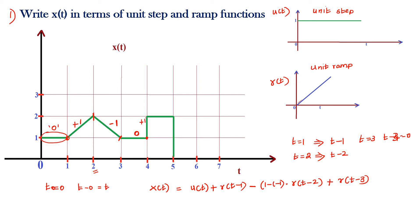From this flat region the amplitude rises by one — it is a unit step signal again. The starting point of this unit step signal is t = 4. Since t = 4, we write t minus four equals zero, so this term is written as u(t − 4).